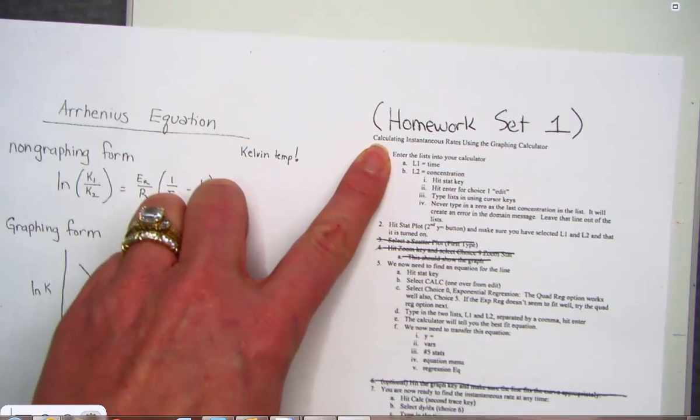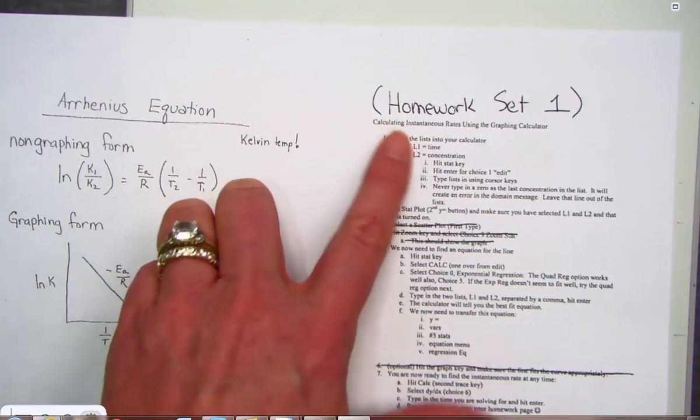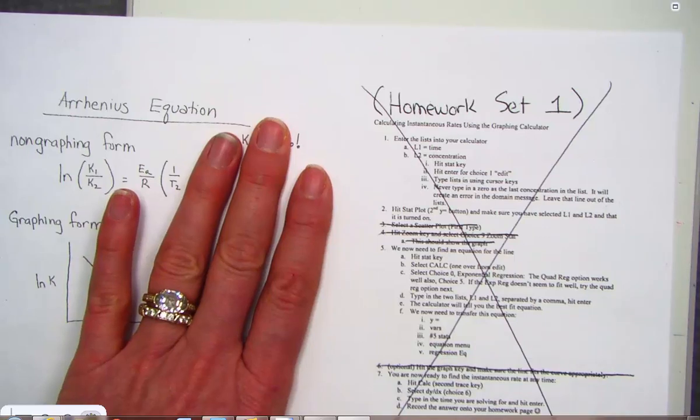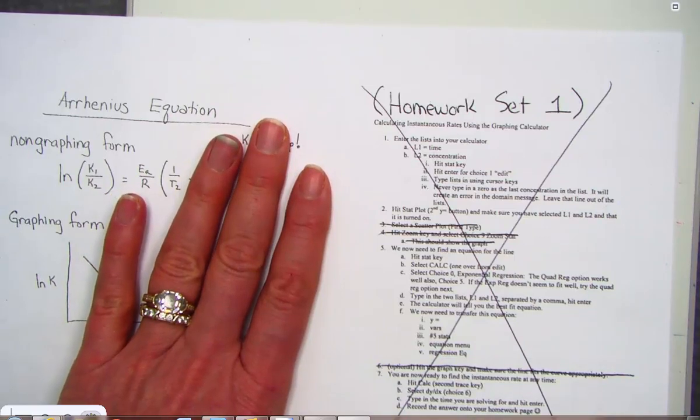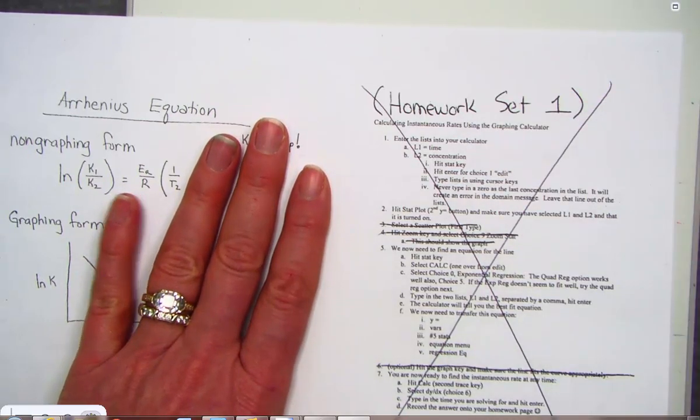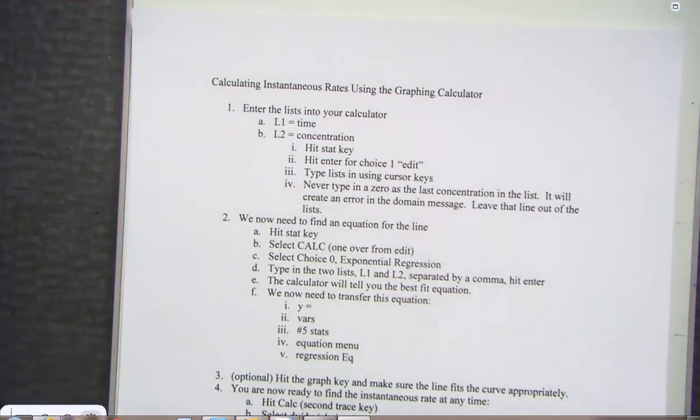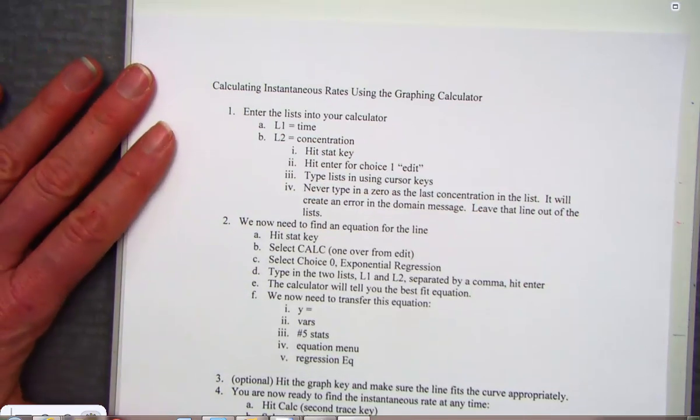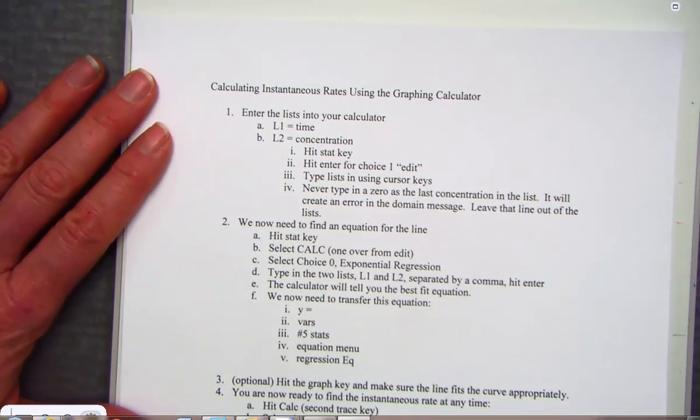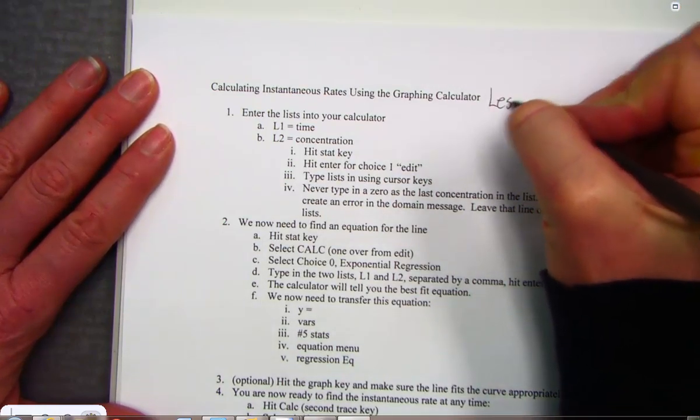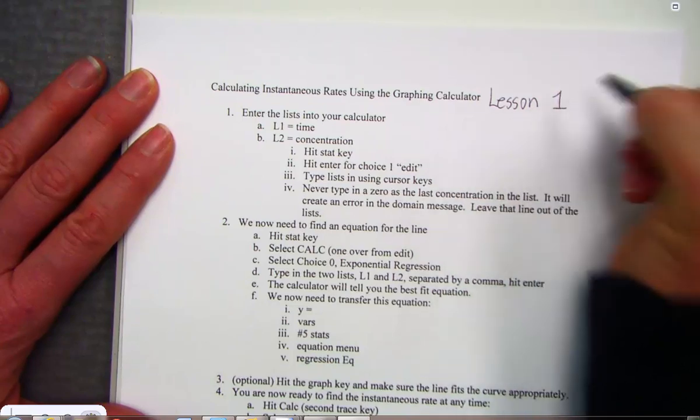This one over here, calculating instantaneous rates, right next to the Arrhenius equation, I have updated. I've kind of streamlined so many different instructions. So I'm going to ask that you just eliminate that from your test taking tool. And I want us to focus on this one instead. It is just the same copy but a cleaned up fewer step version, eliminating some of the unnecessary graphing steps. So how to calculate an instantaneous rate. This is a test taking tool coming from lesson one.